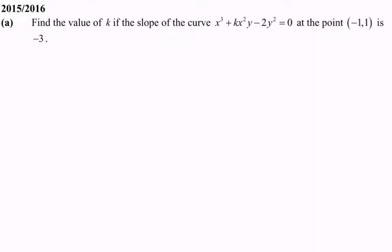Hello everyone. Here we have an example for the topic of differentiation. Find the value of k, if the slope — meaning dy/dx — of the curve x³ + kx²y - 2y² = 0 at the point where x = -1 and y = 1 is -3. So the dy/dx equals -3.